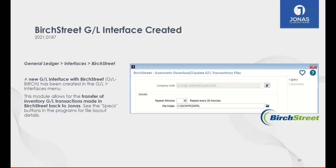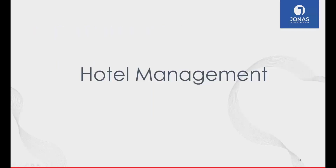One more GL item before passing it over: we've created a new GL interface to Birch Street. We have a couple of interfaces to the Birch Street procure-to-pay system, and the newest one is the ability to import journal entries. Clubs using Birch Street for procurement and inventory cycles can now import inventory or procurement-related journal entries into Jonas and have those adequately reflected in the financial components of Jonas.